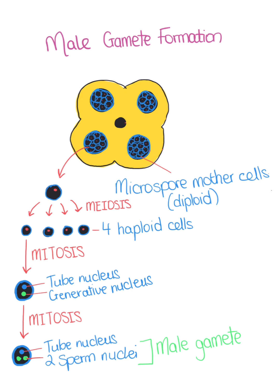The tube nucleus plays a role in double fertilization, where a pollen tube grows down from the tube nucleus through the style and towards the ovule. This is where the male gametes fuse with the female gametes in the ovary.